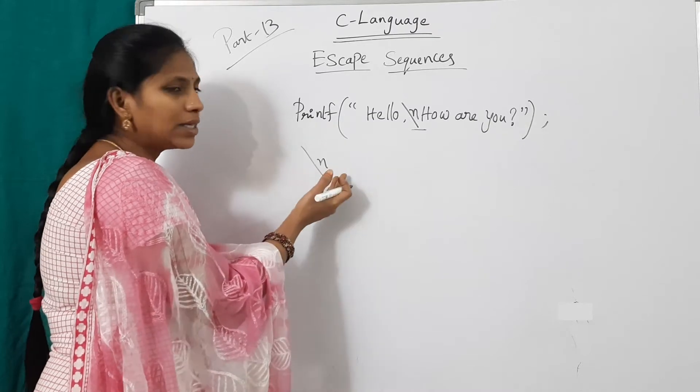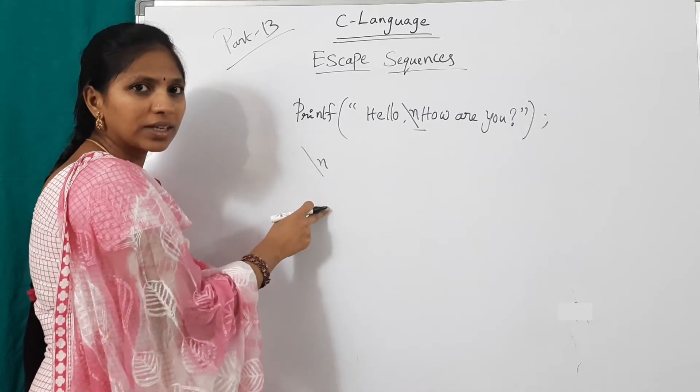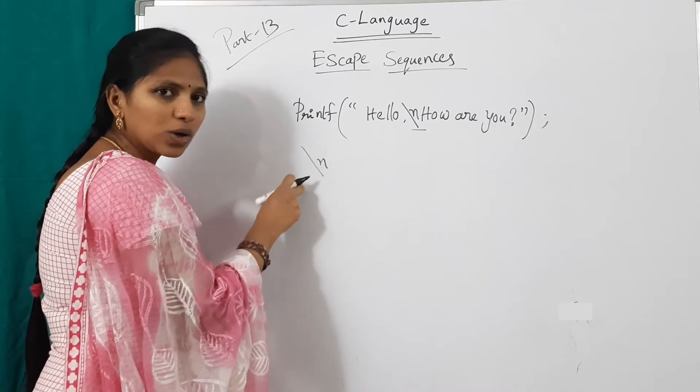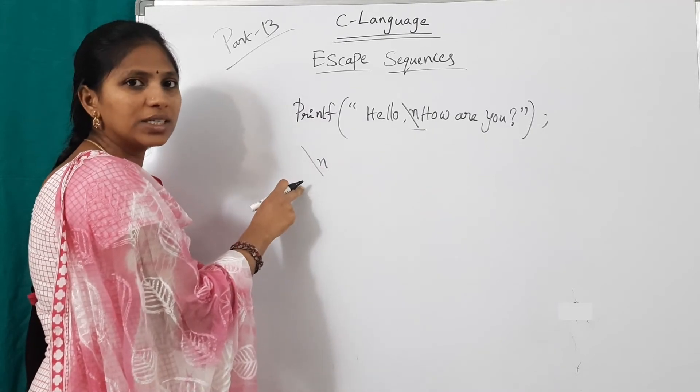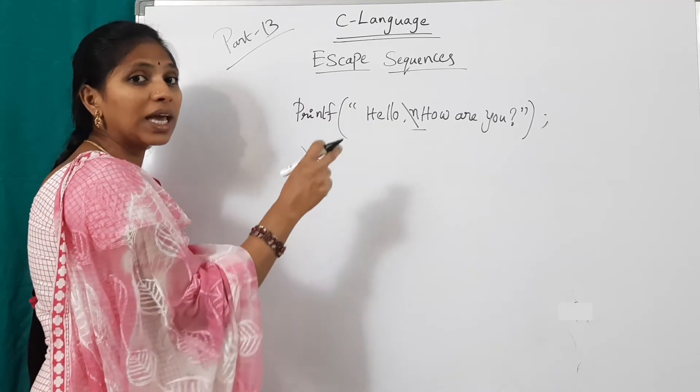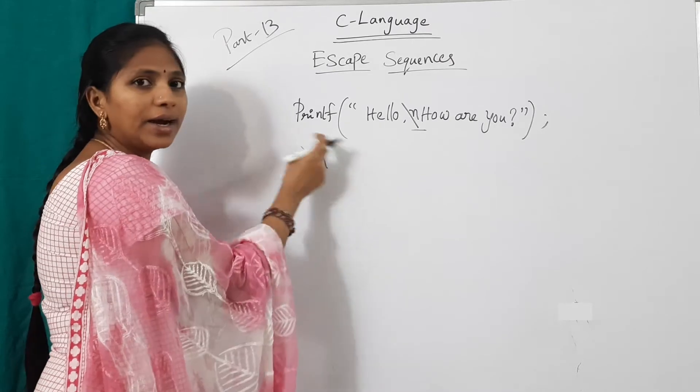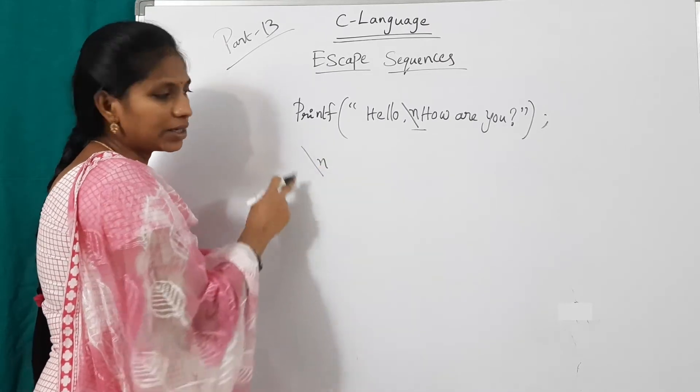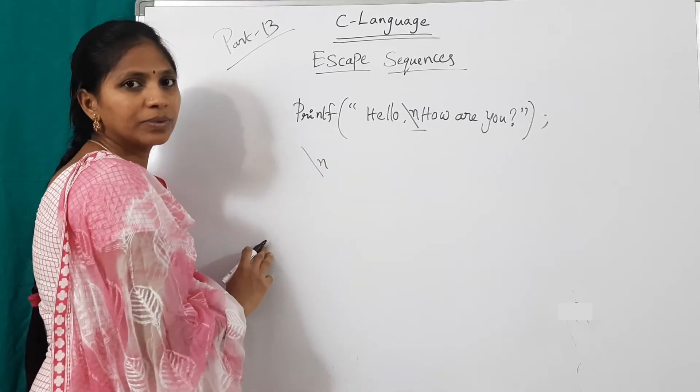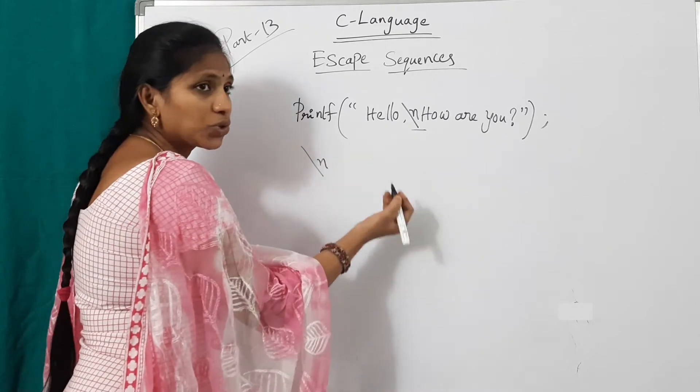One is a slash and another one is n. Combination of two characters. Though it is a combination of two characters, it is an example of a character literal, treated as only one character. Slash n. This is for next line.